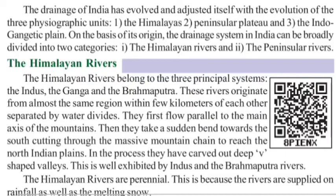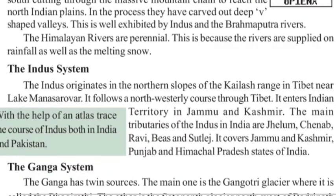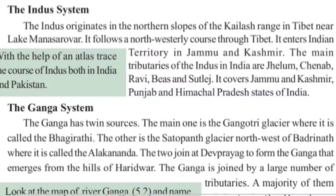The rivers do not dry up even during summer. The Indus originates in the northern slope of the Kailash ranges in the Tibetan plateau near Lake Manasarovar. It flows a north-westerly course through Tibet, then enters India mainly in Jammu and Kashmir — presently Ladakh. The main tributaries of the Indus in India are Jhelum, Chenab, Ravi, Beas, and Sutlej.